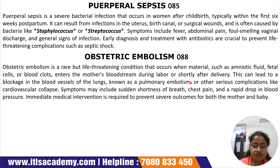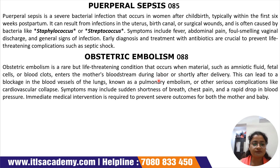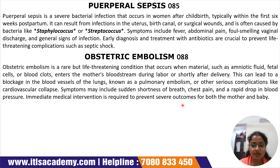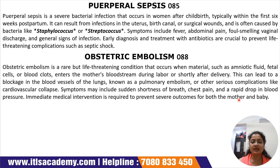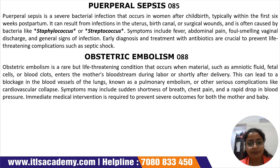Obstetric embolism, subcode O88, is a rare but life-threatening condition that occurs when materials such as amniotic fluid, fetal cells, or blood clots enter the mother's bloodstream during labor or shortly after delivery. This can lead to a blockage in the blood vessels of the lungs (pulmonary embolism) or other serious complications like cardiovascular collapse. Symptoms include shortness of breath, chest pain, and a rapid drop in blood pressure. Immediate medical intervention is required to prevent severe outcomes for both mother and baby.